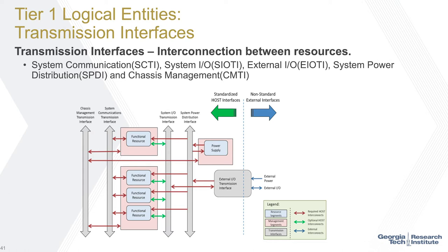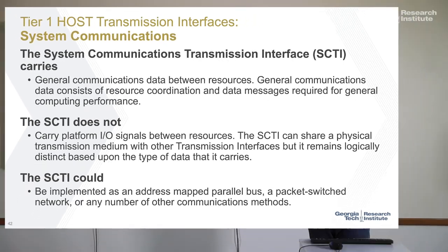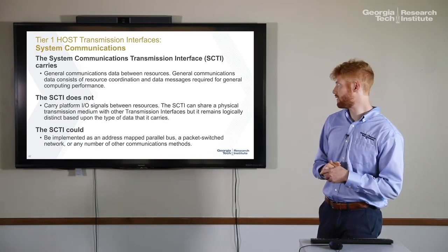Another logical entity is the transmission interfaces — not to be confused with the transmission components. Transmission components are more about needing a cable or a PCB, but what they don't define is the actual communication: the protocols or the type of data that gets passed through. The transmission interface covers how functional resources communicate with each other. One is system communication — all embedded computing platforms need a way for general communication to go between different resources. This is separated from platform IO, because platform IO is where vendor lock-in and non-standard interfaces can occur.